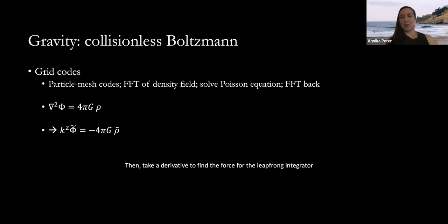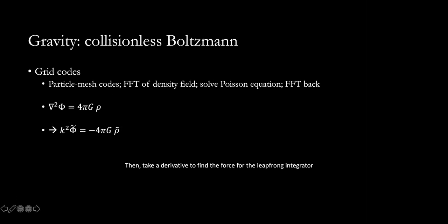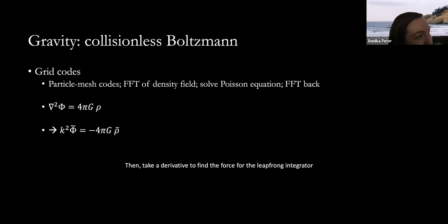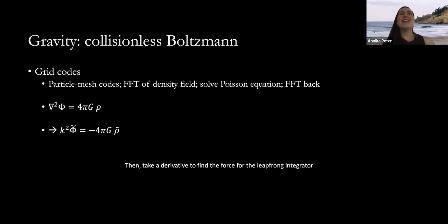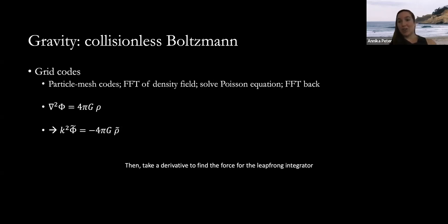For grid codes, the FFT approach tends to be a fast way of calculating gravitational forces, especially without enormous over- or under-densities. Most grid codes now have adaptive mesh refinement — nested layers of grids. Typically codes adopt a hybrid approach: one method for small dense scales and a grid approach for larger scales. Wavelets haven't been used much but there is some discussion in the Vogelsberger et al. review article.